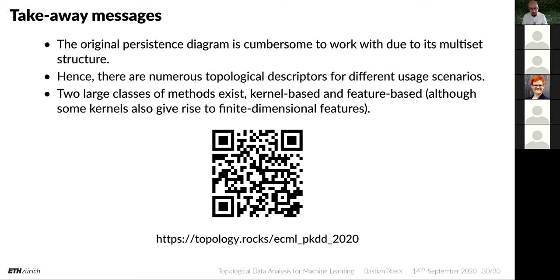Moreover, you're not that often interested in a proper metric in machine learning — it's often perfectly sufficient to know dissimilarity information, to know that two objects are very dissimilar. Having a precise quantifiable number is not that often what you're after, particularly not for classification.